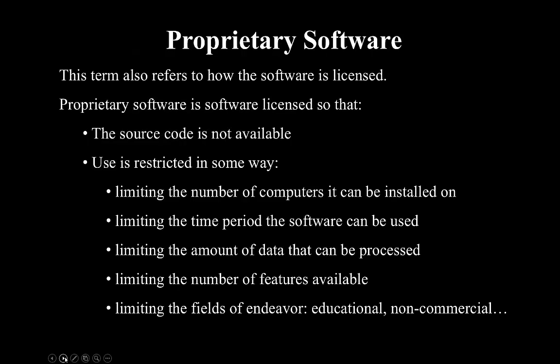With proprietary software, the term also refers to how the software is licensed. Proprietary software is licensed so that the source code is not available and use will be restricted in some way — perhaps limiting the number of computers it can be installed on, the period the software can be used, the amount of data that can be processed, the number of features available, or even limiting the fields of endeavor such as an educational license or a non-commercial license.